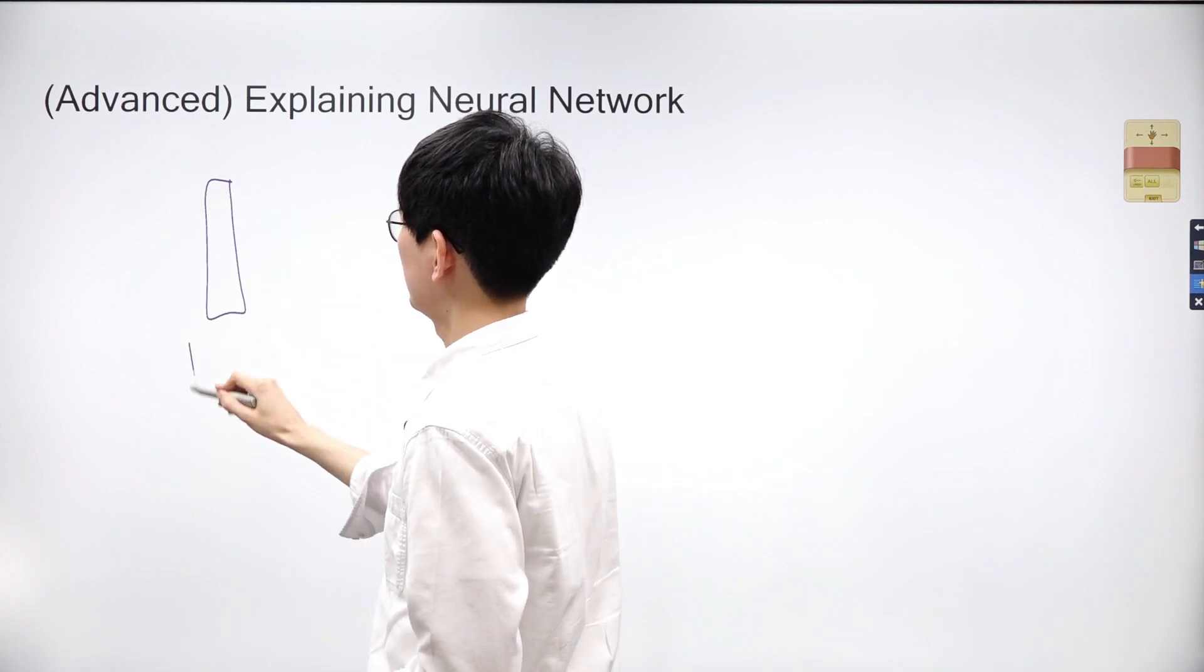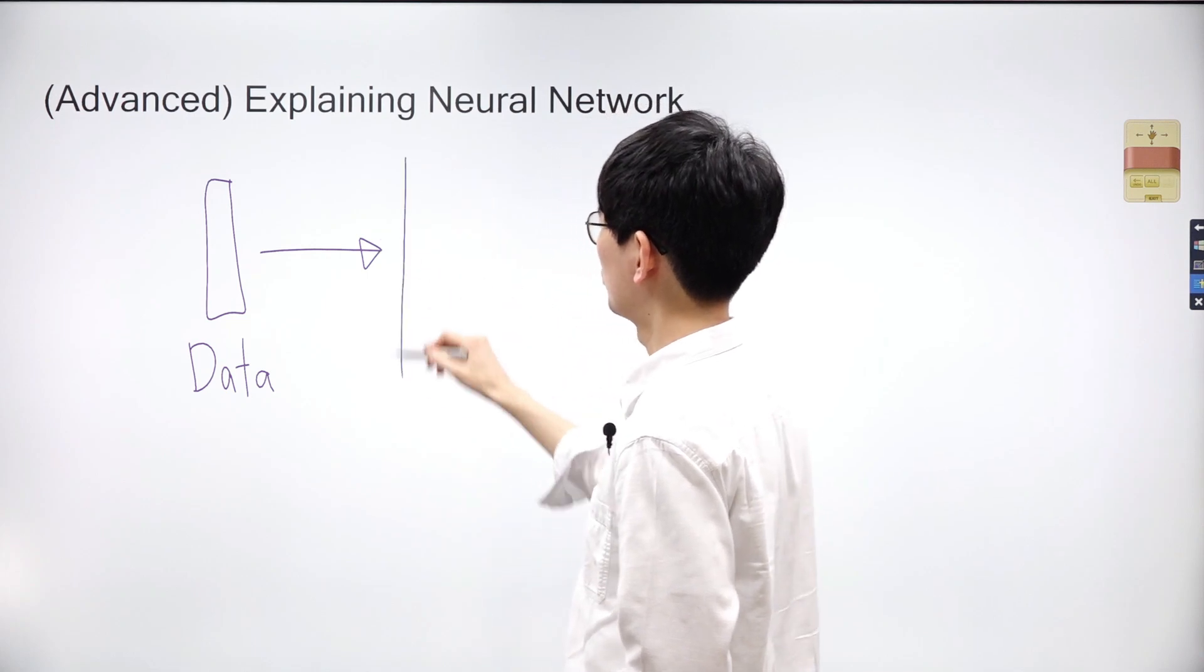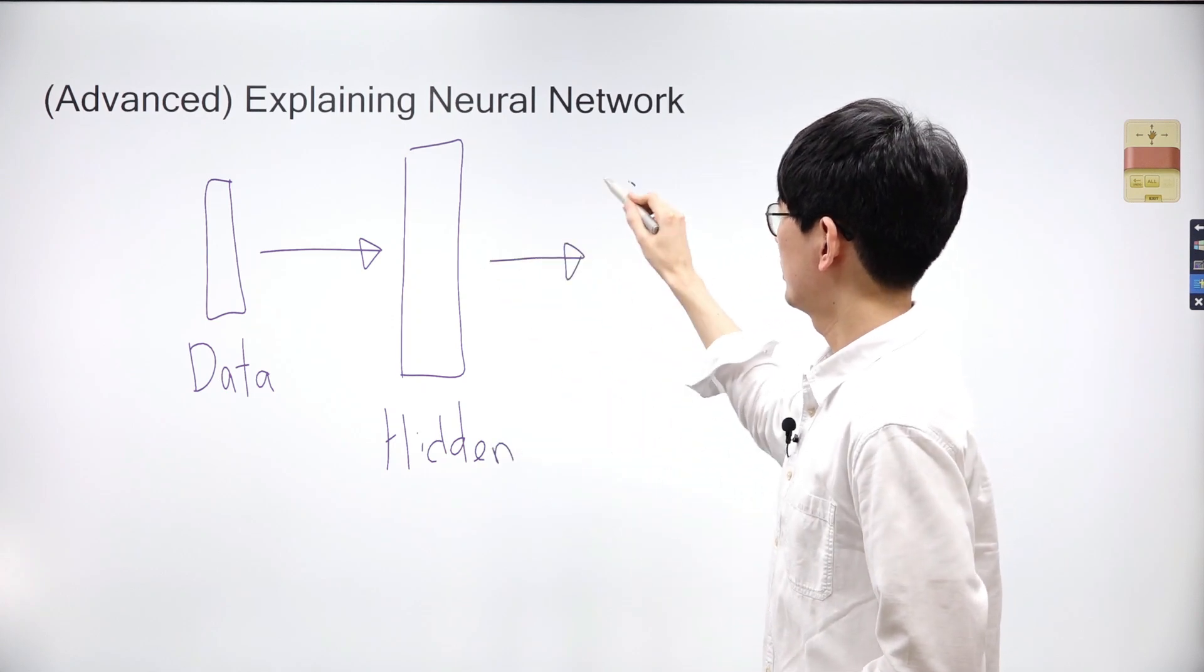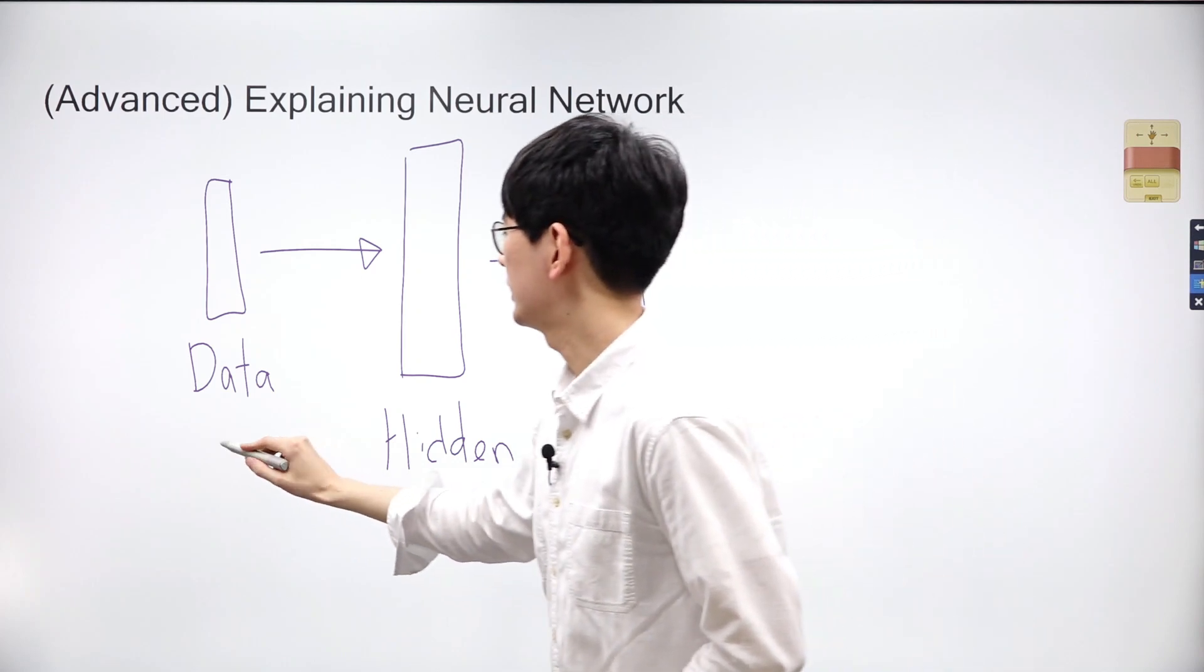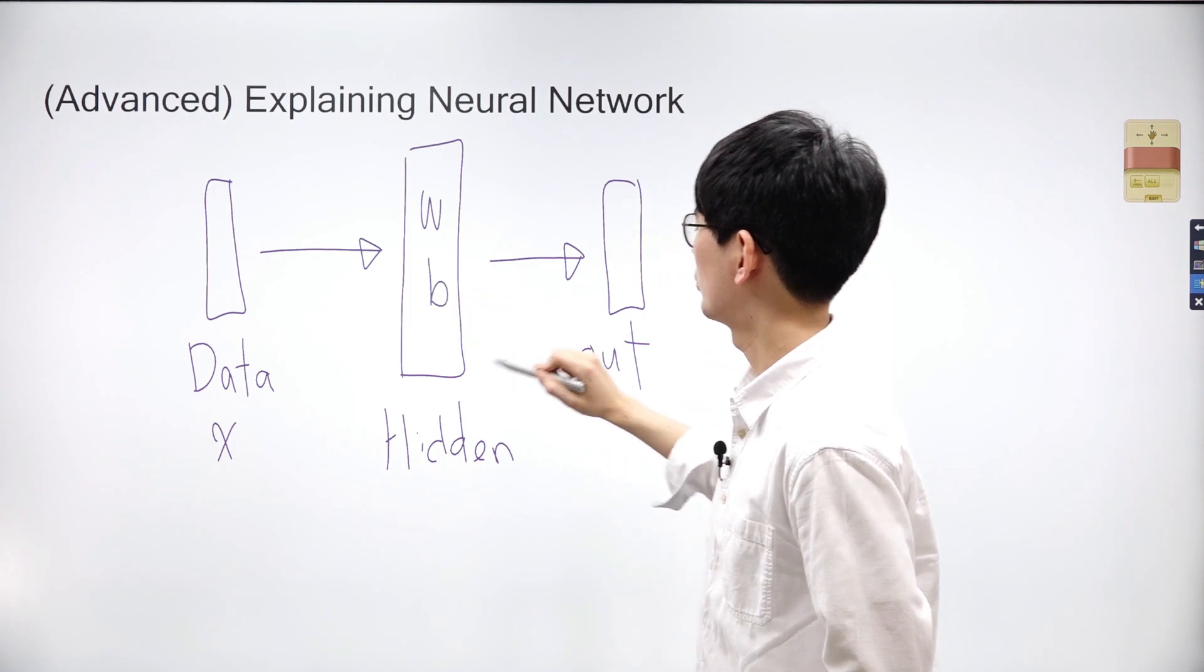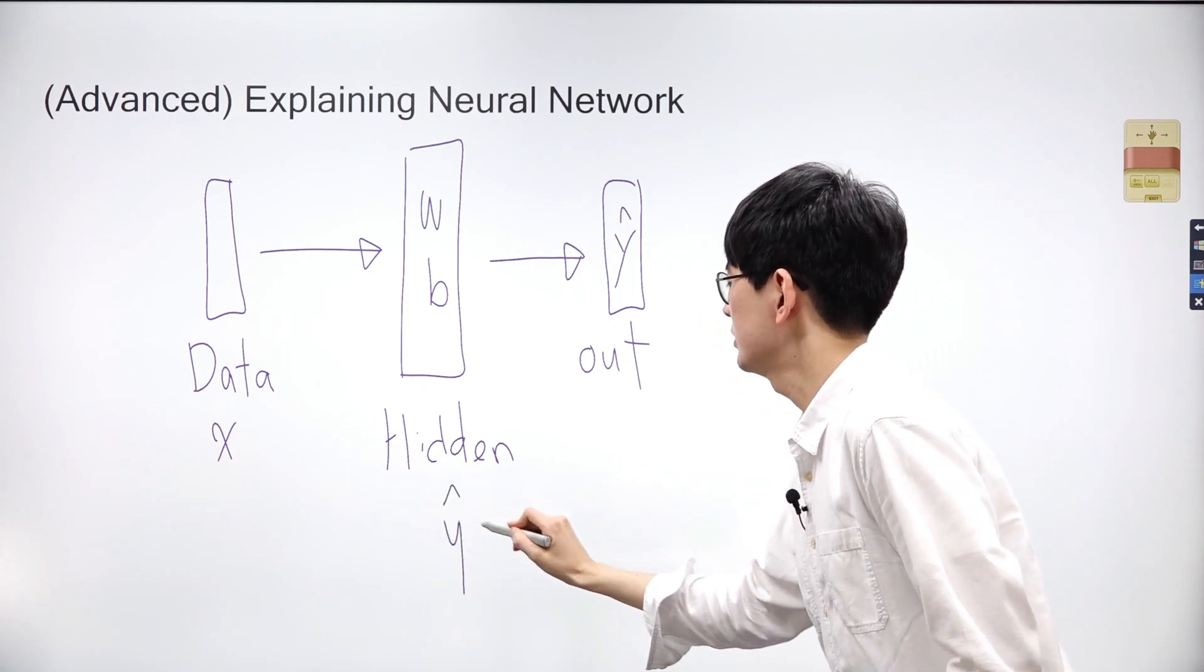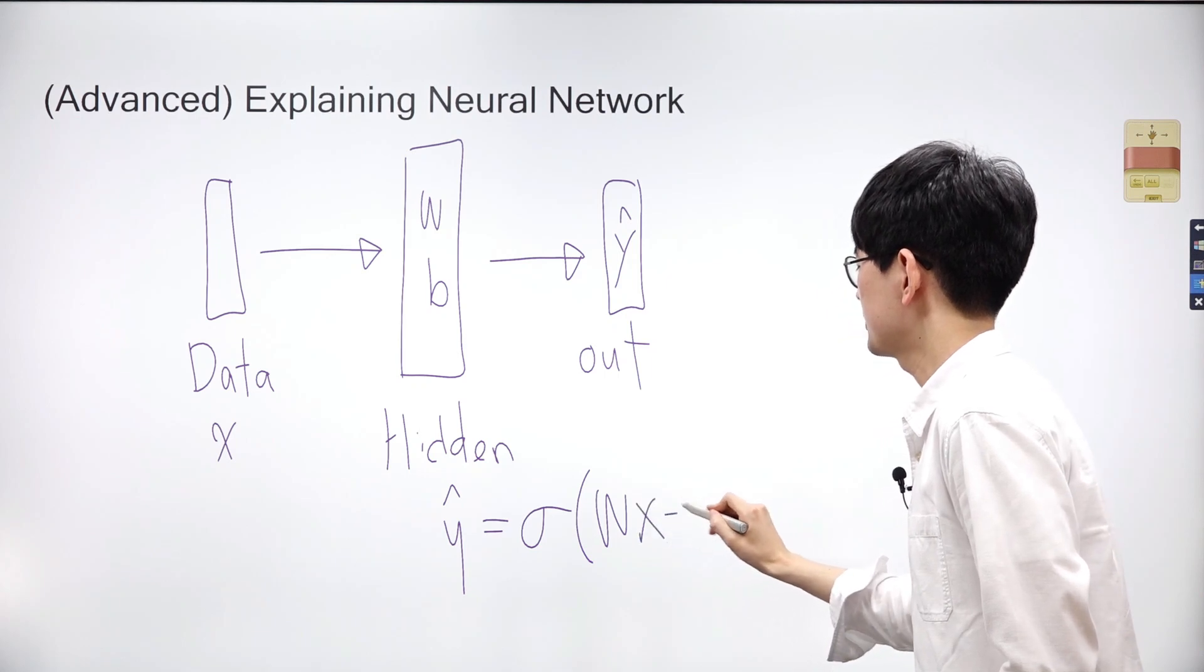Let's delve into the basic structure of neural networks. Let's denote the data as X, the weights and bias in the hidden layer as W and B, and finally the outputs as Y-hat. Then the output Y-hat is determined by the activation function sigma applied to Wx plus B.